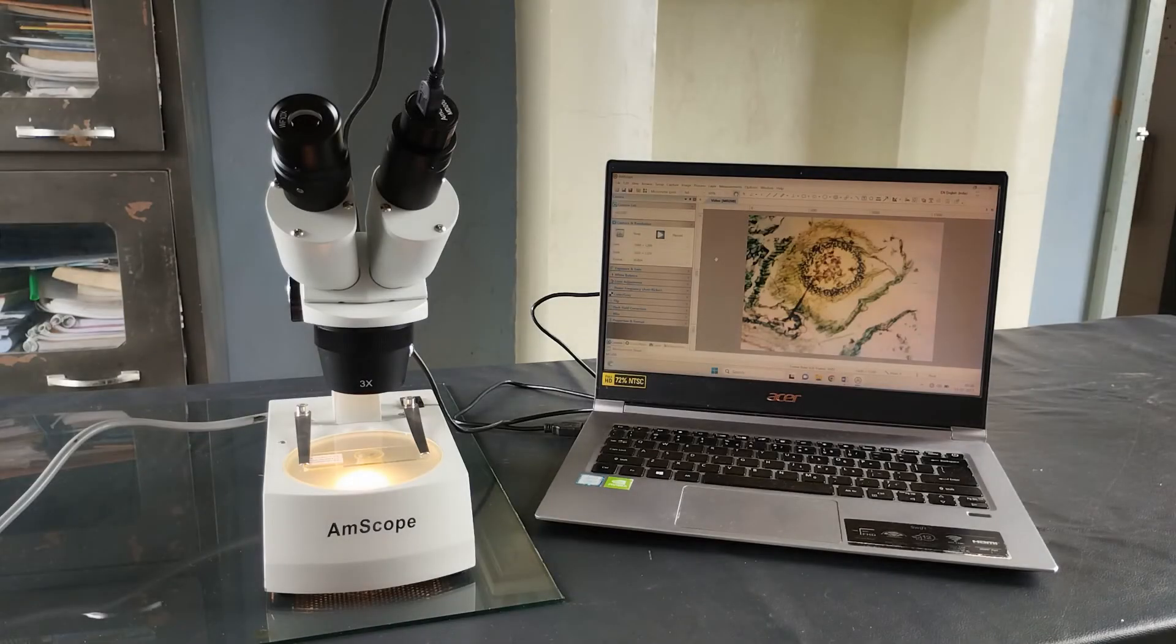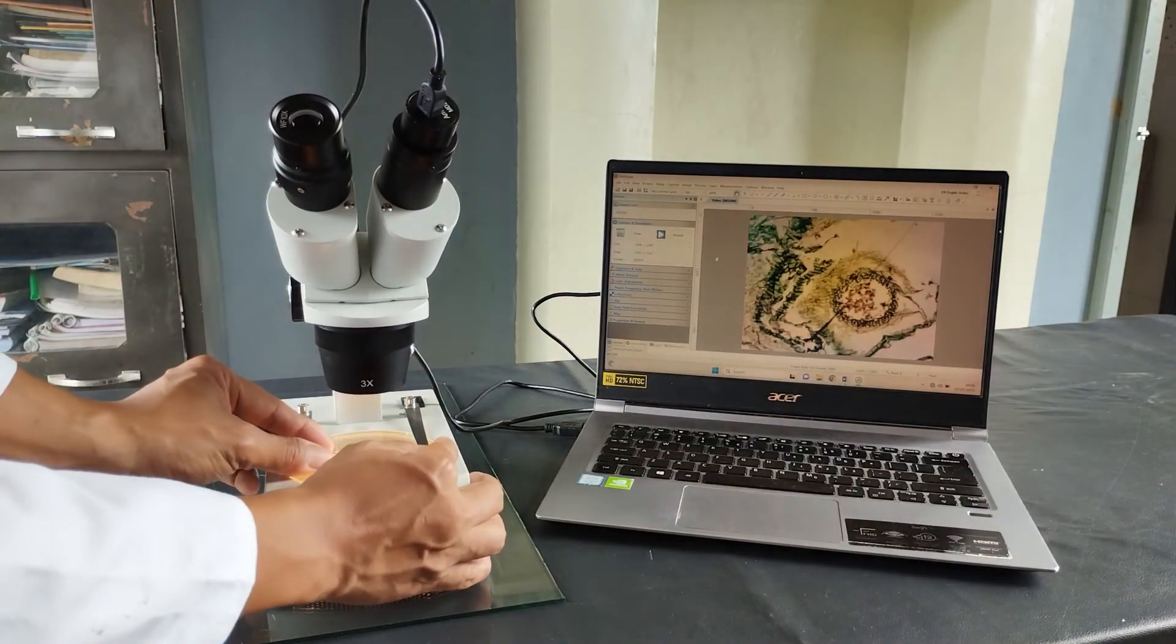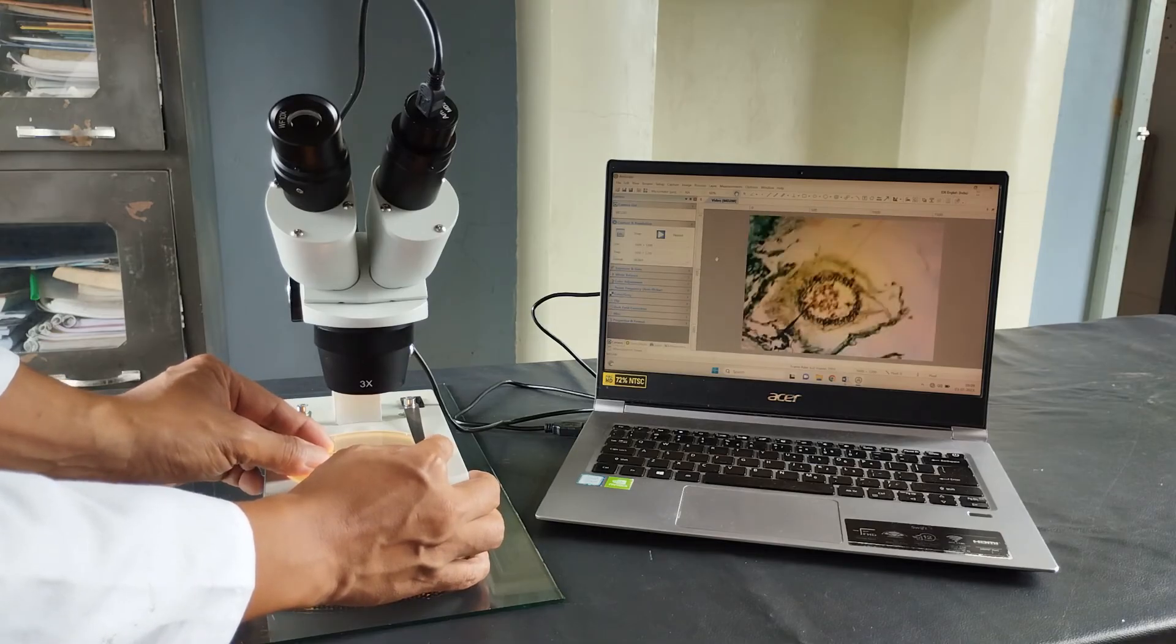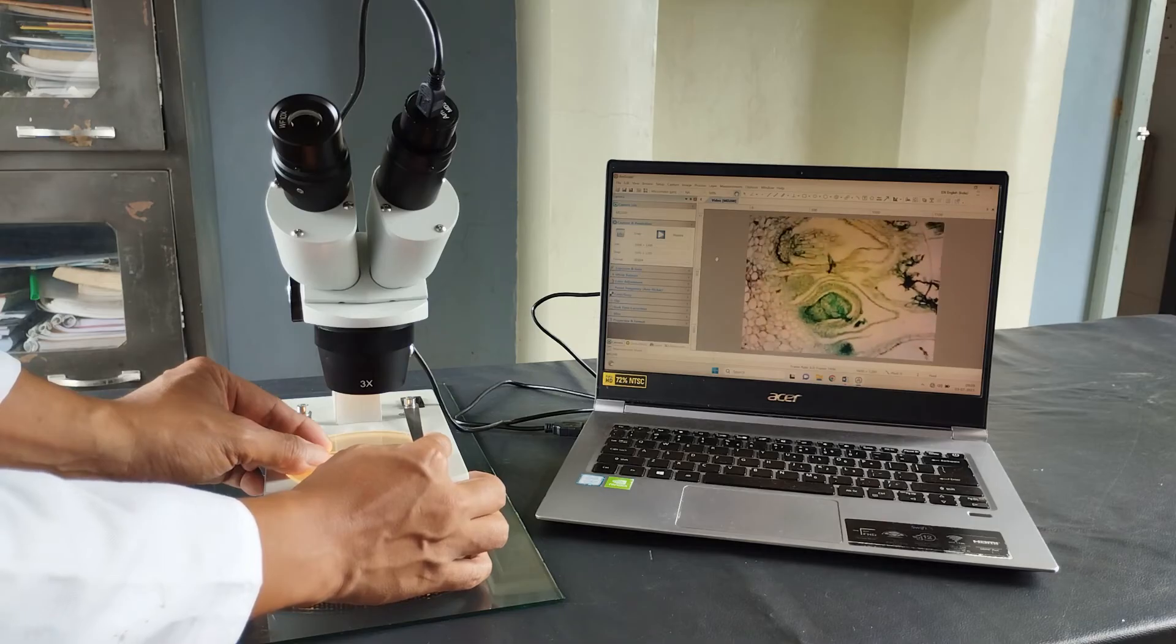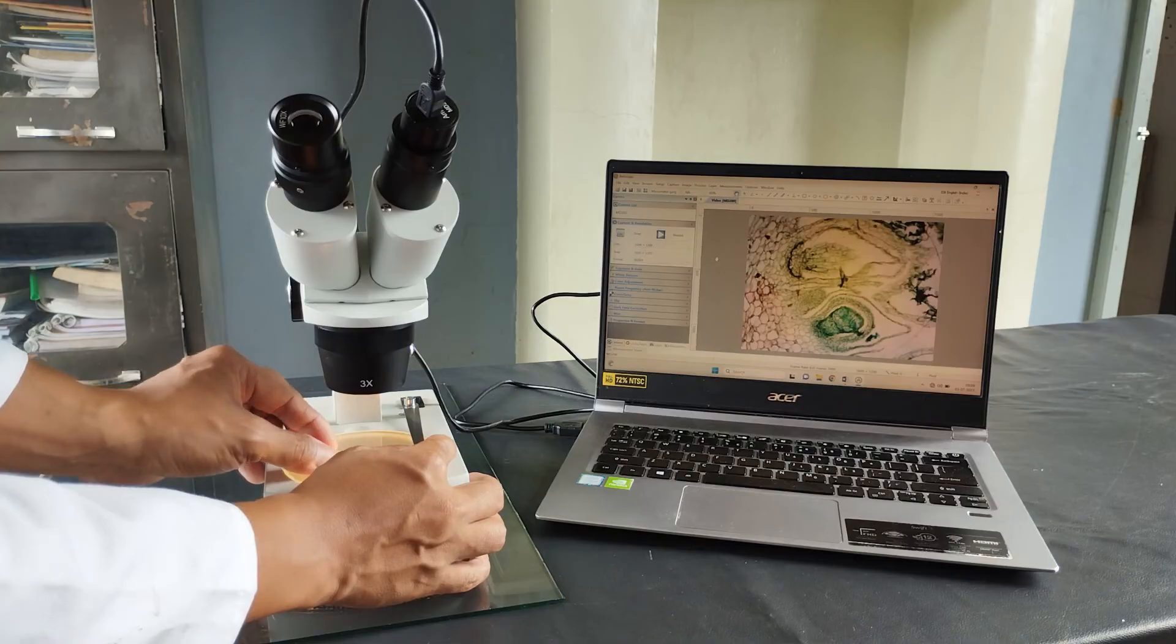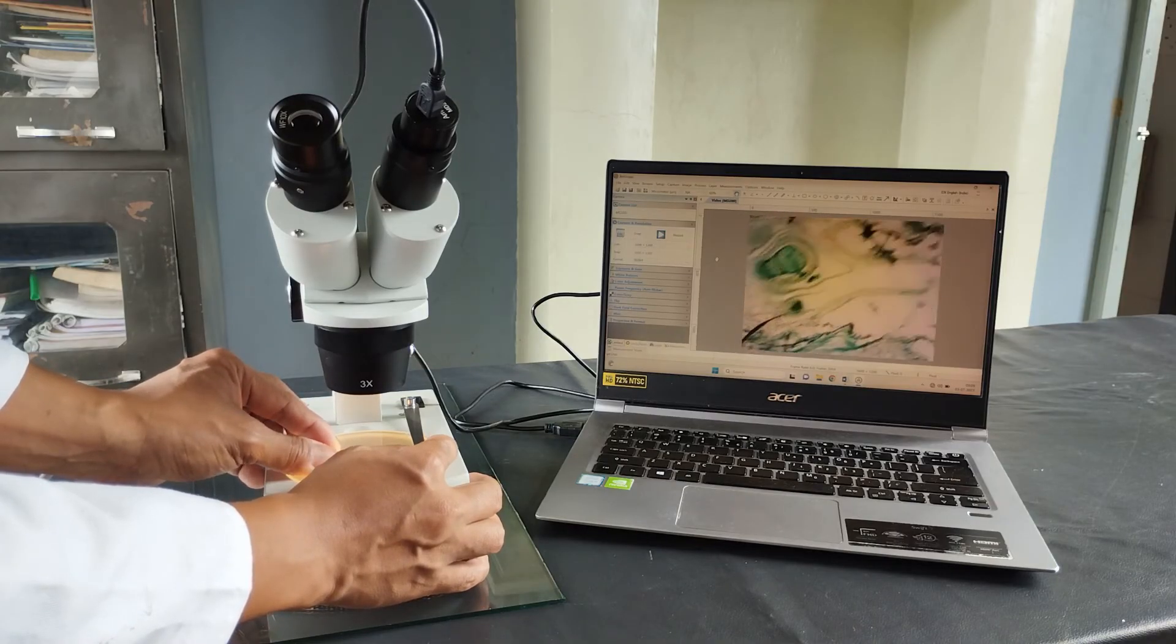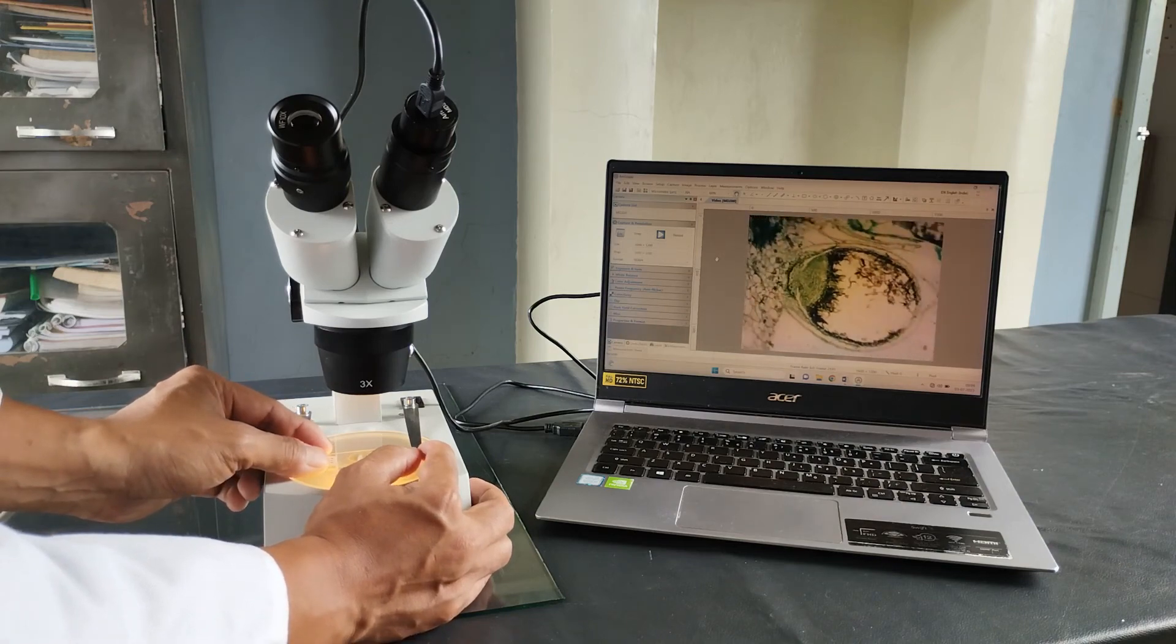Higher models of stereo microscopes also usually come equipped with digital cameras that can be connected to a computer and are capable of taking photos or recording live videos of the specimens being examined. This particular model that I have here also came with a 2 megapixel eyepiece USB camera with the necessary software that can be installed on a computer and used for capturing visual data of the specimen. You can check out my previous video on how the camera is set up and used in this microscope. Just click on the link given in the top right corner of the screen or the link in the description below.